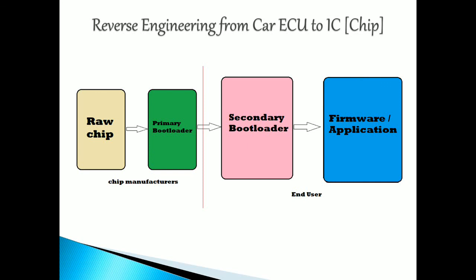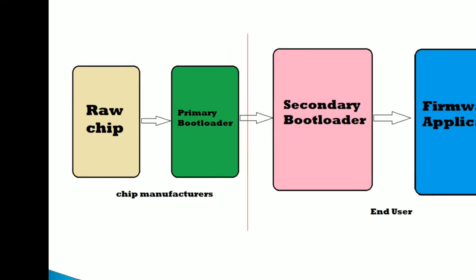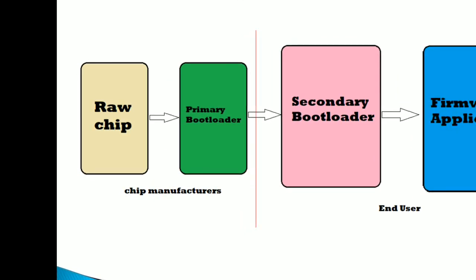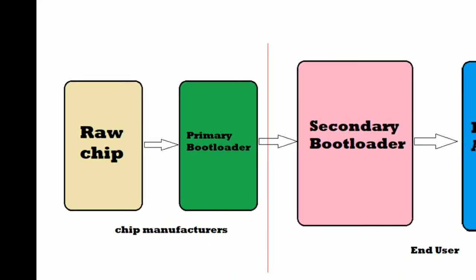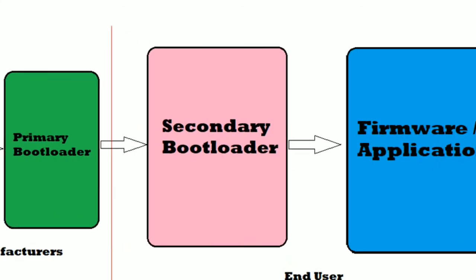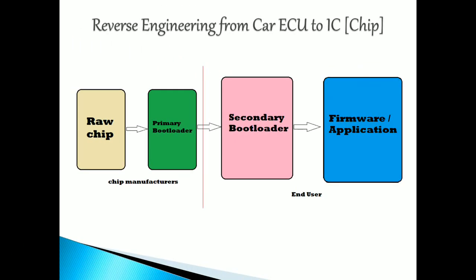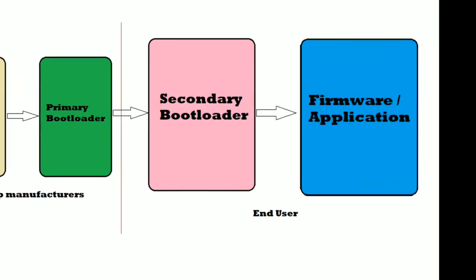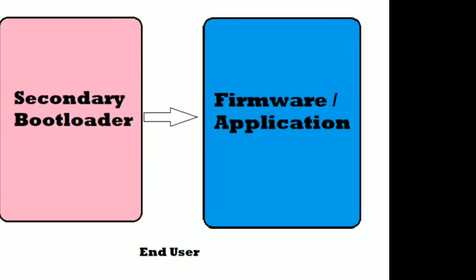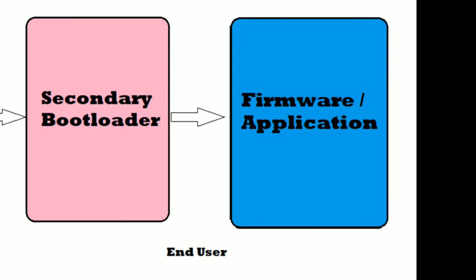Once you flash the secondary bootloader, you then flash the firmware or application. Firmware is nothing but the binary image file or application file. So the full process is: you receive the chip already flashed with the primary bootloader, you flash the secondary bootloader, and on top of that you flash the firmware or application file. This final application chip gets put into the car's ECU.